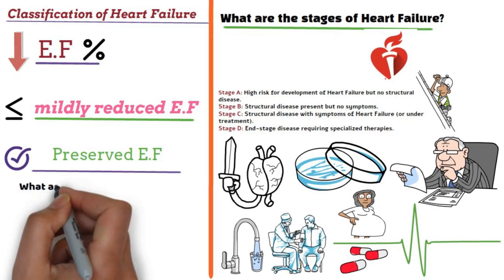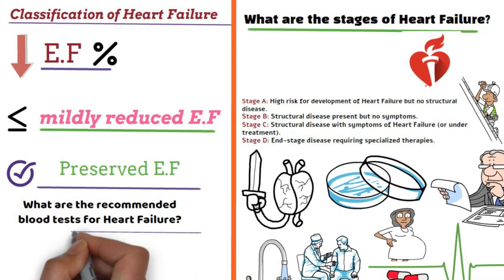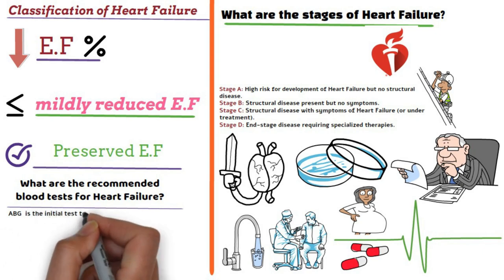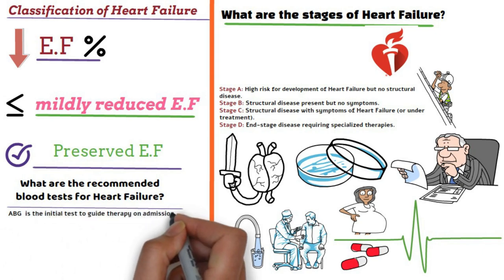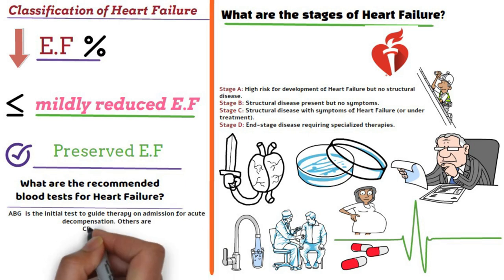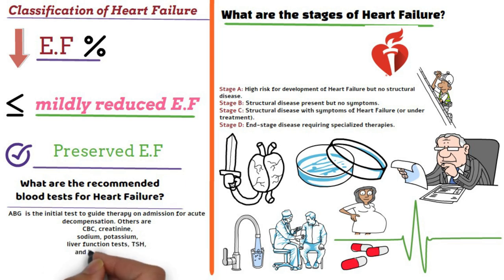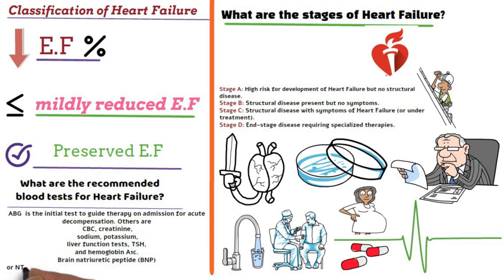What are the recommended blood tests for heart failure? Arterial blood gas is the initial test to guide therapy on admission for acute decompensation. Others include CBC, creatinine, sodium, potassium, liver function tests, TSH, and hemoglobin A1c. Brain natriuretic peptide (BNP) or NT-proBNP is a marker of importance to confirm diagnosis.